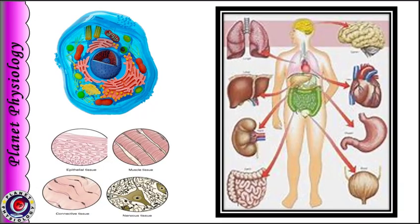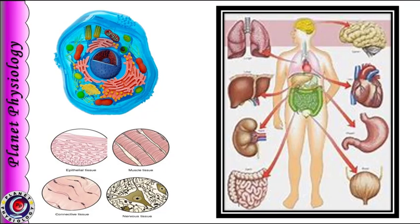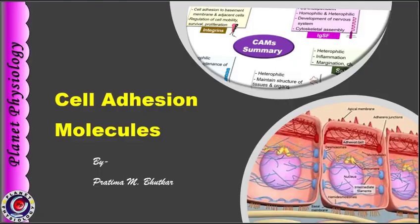We all know that cell is the basic structural and functional unit of living organisms. Structurally and functionally similar cells are grouped together to form tissues. But have you ever wondered how these cells are connected to each other to form tissues? It is due to the presence of cell adhesion molecules, and the ability of cells to adhere to each other is a fundamental property in the evolution of multicellularity. Today we shall study about cell adhesion molecules.